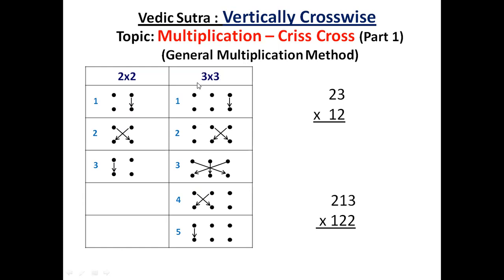If you consider 3 digit by 3 digit, we have 5 steps. But though there are 5 steps, there is only 1 new step, that is 3rd step. If we just compare, the first 2 steps are same here. Last 2 steps are same here. Only 3rd step is new.